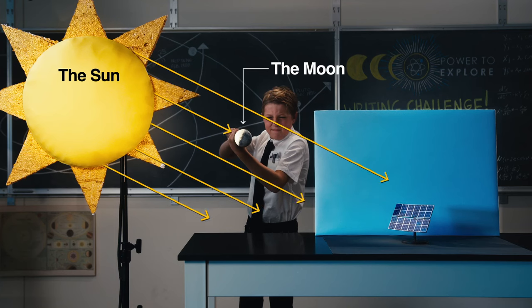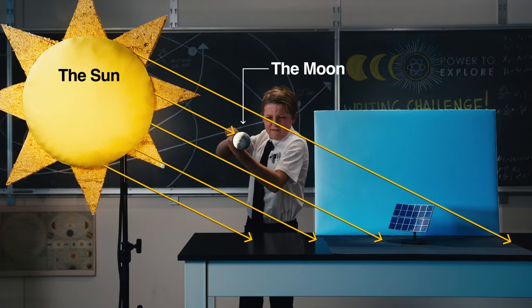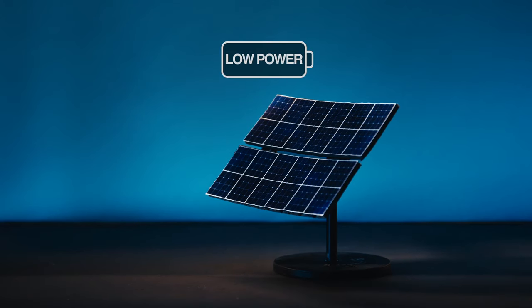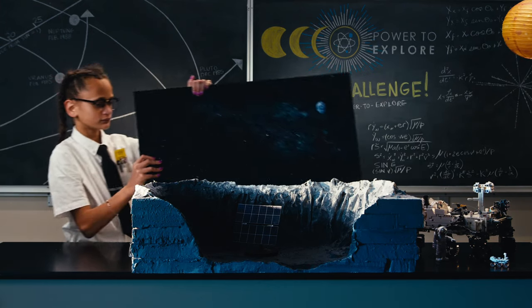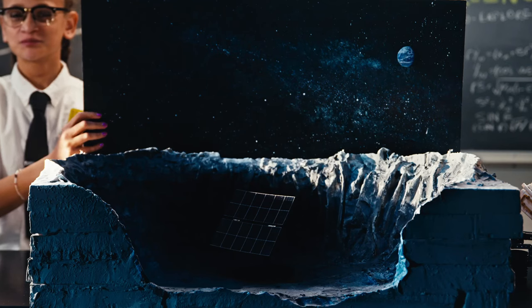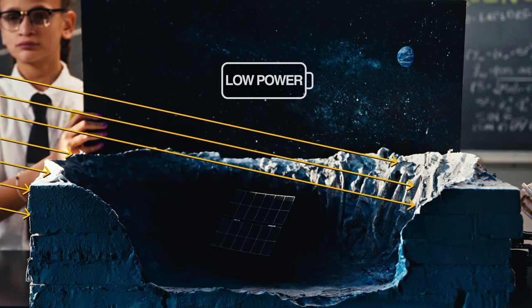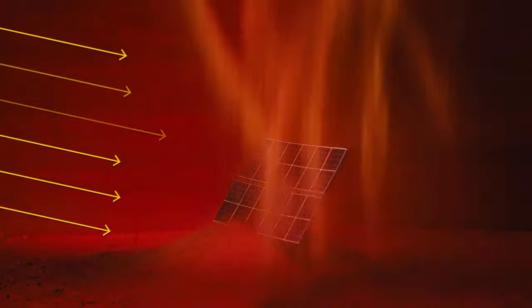But what if something blocked that source, like the moon during a solar eclipse? And what if you wanted to go somewhere that's always dark, like a crater on the moon? Or a dusty planet like Mars?